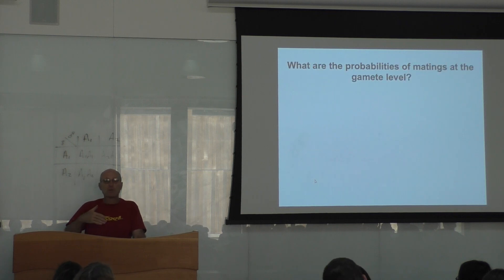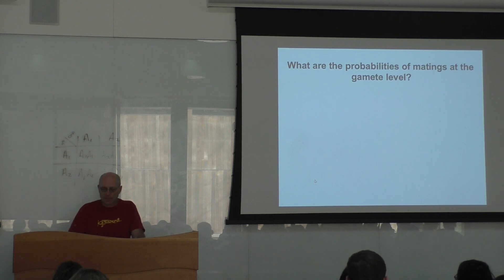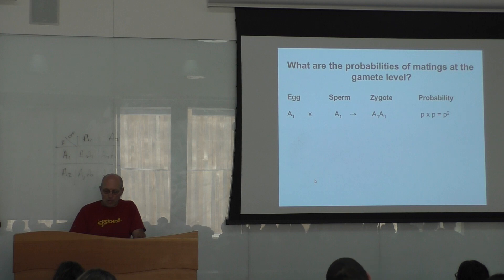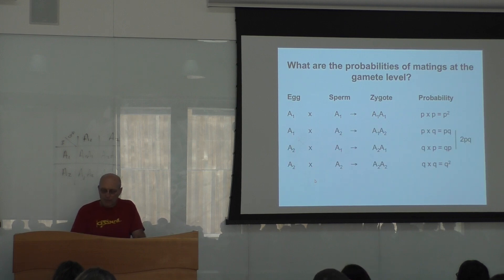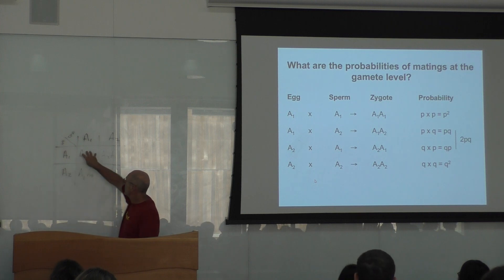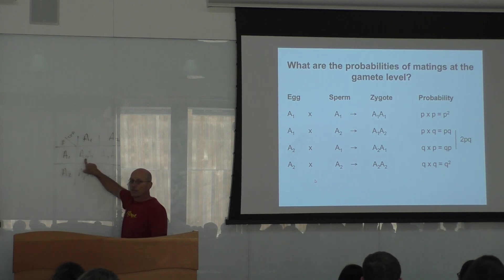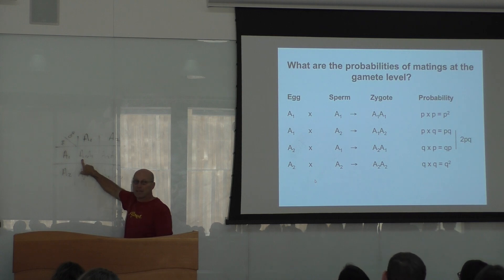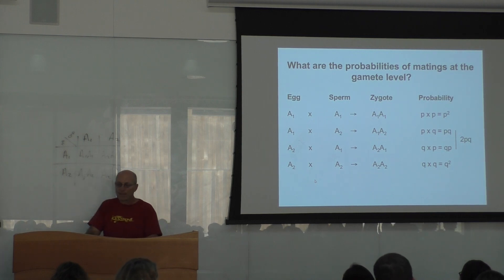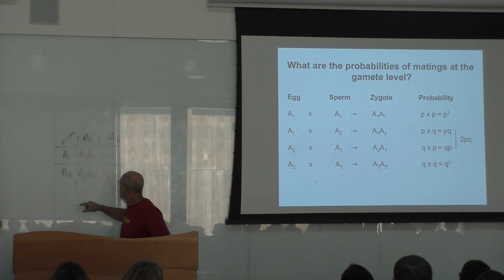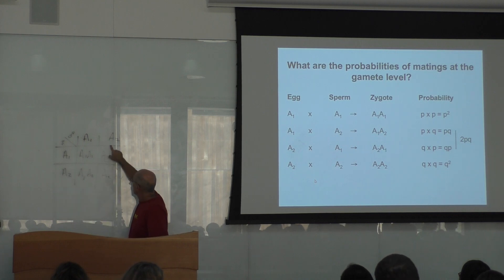Because we are interested in microevolution — what happens in the next generation — we look at the probabilities of mating at the gamete level. You have four situations: A1 multiplied by A1, where the frequency of A1 is P, so it's P times P = P squared. A2A1 would be QP, and A1A2 would also be PQ.